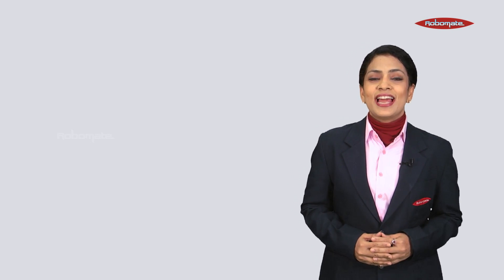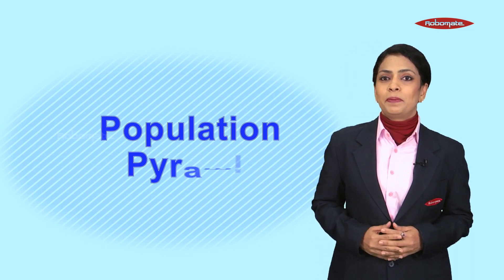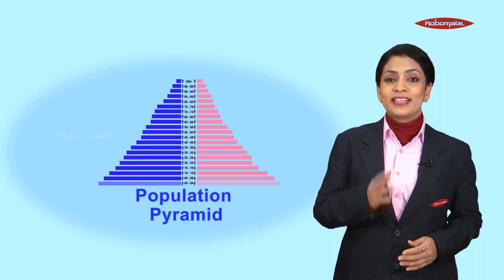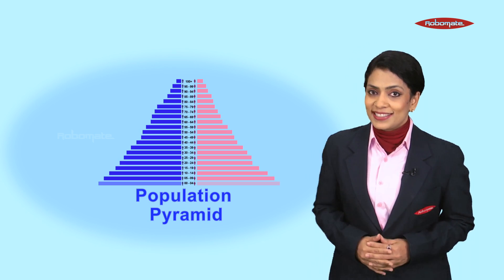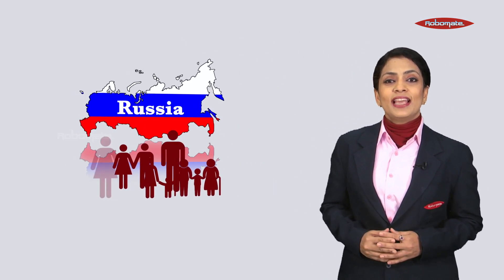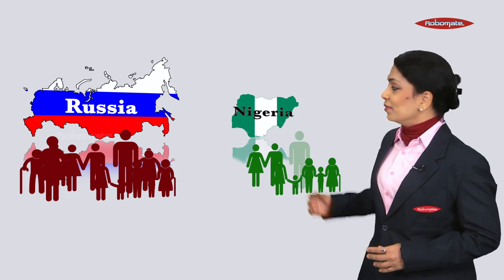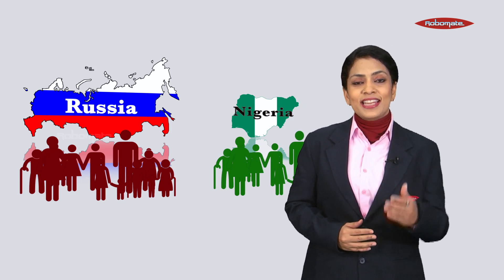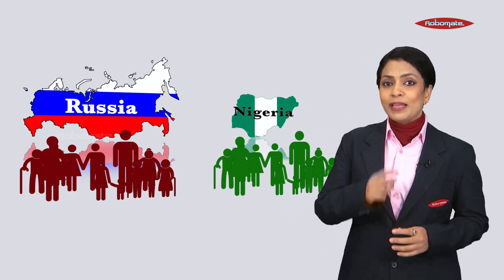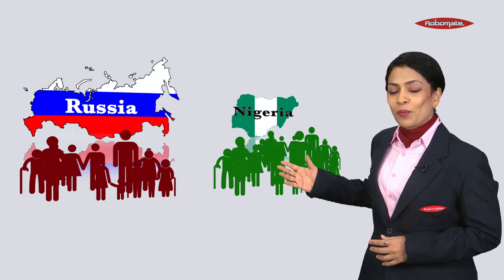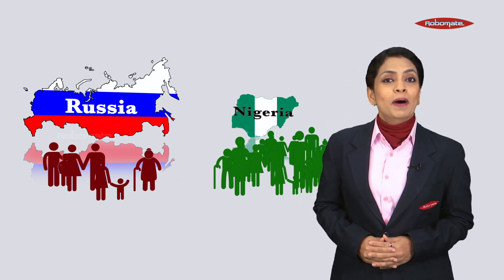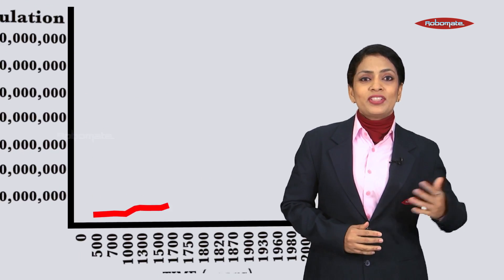In this module we shall understand what a population pyramid is. The population pyramid reveals the story of a country and also predicts where the country is headed. Russia, with the largest territory in the world, has roughly the same total population as Nigeria, a country one-sixteenth its size. But this similarity won't last long — one of them's population is rapidly growing while the other is slowly declining.